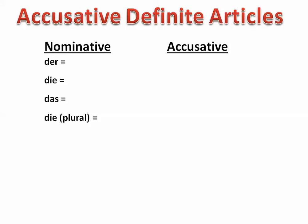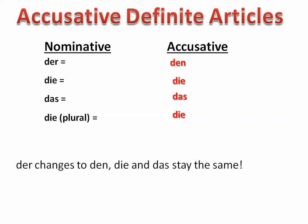Now let's take a look at definite articles. A definite article is nothing more than 'the.' In English we only have 'the,' but in German there are three ways to say 'the': der, die, or das in the nominative. But in the accusative, if it's a masculine noun, it will change to den, and die and das will stay the same. For example: 'die Katze ist groß, ich sehe die Katze' — 'der Hund ist groß, ich sehe den Hund' — 'das Auto ist blau, ich sehe das Auto.' So just remember: der changes to den, die and das stay the same.